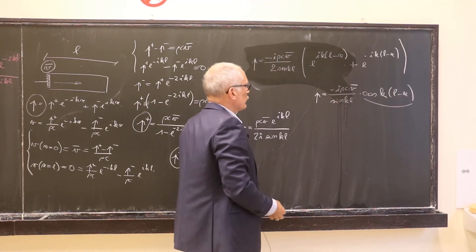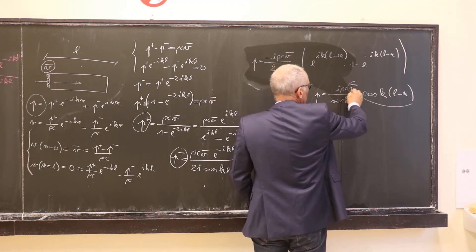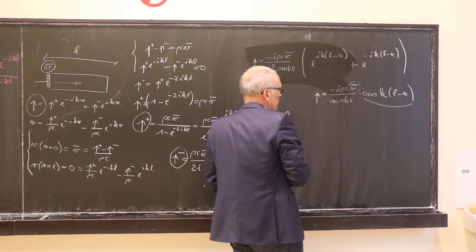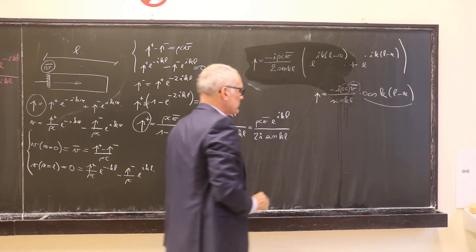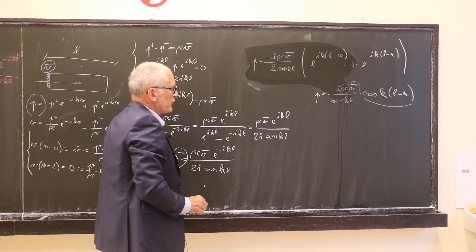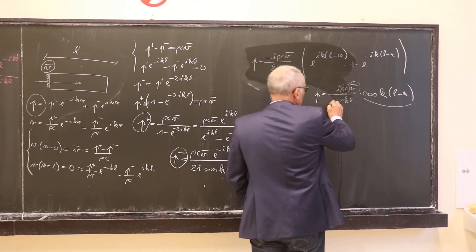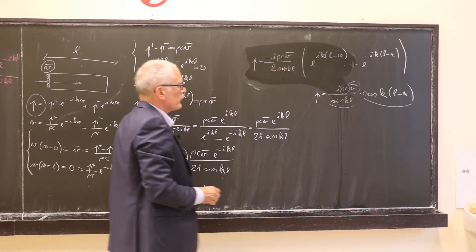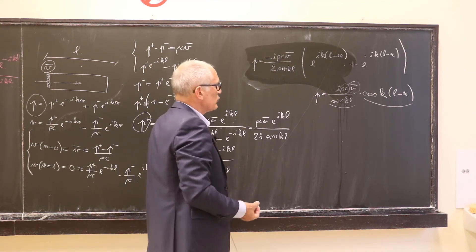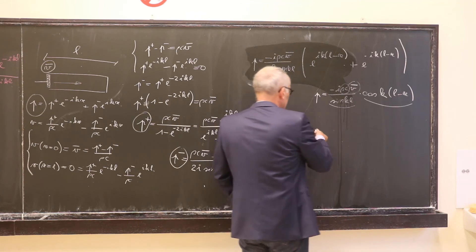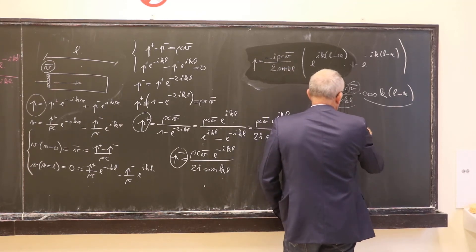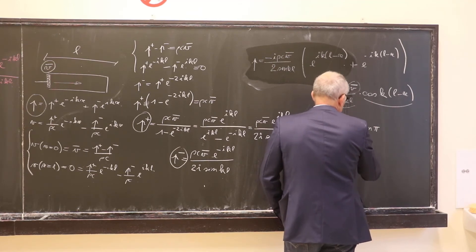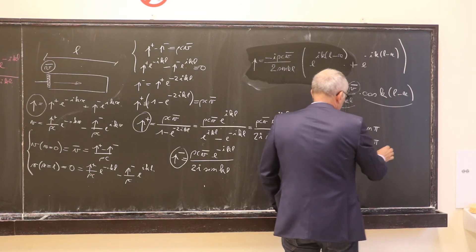What is interesting in this solution is that we have a modulation function — cosine k(l minus x) — that defines how the pressure varies in the tube, and an amplitude proportional to the velocity of the piston and to the characteristic impedance of the medium. But we also have a term sin(kl) in the denominator which can be zero. When sin(kl) equals zero, the pressure goes to infinity. This happens when kl equals n times π.